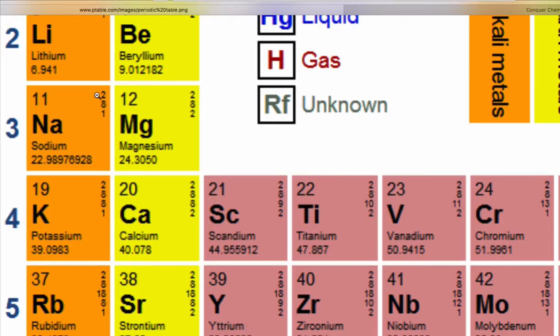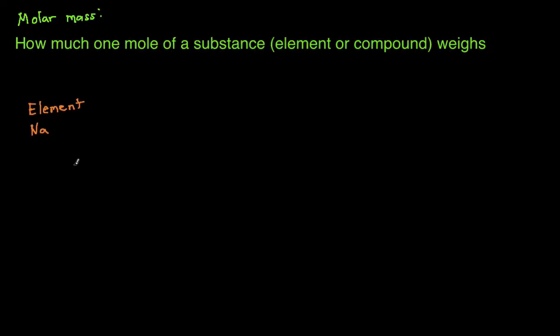Calculating the molar mass of an individual element is actually extremely easy. All you have to do is go into the periodic table, look up the element and then look at its atomic mass, which is that number on the bottom, and that's its molar mass. So the molar mass of sodium is going to be 22.99 grams per mole. Grams per mole is typically the units that molar mass is reported in.